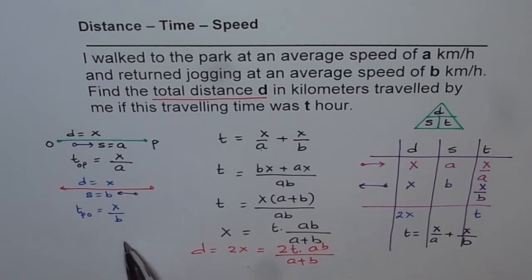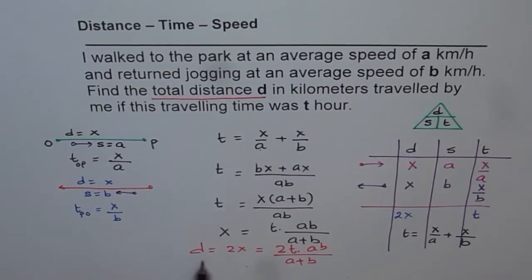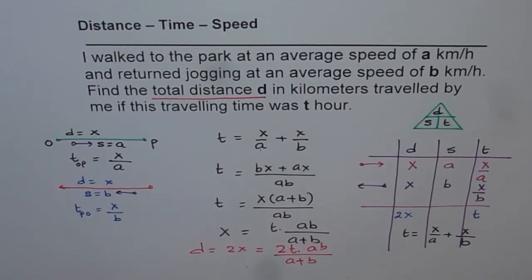You can follow either of these methods — the table approach or the direct method. Either way, the total distance, which is 2X, equals 2T times AB divided by A plus B. I hope that is absolutely clear. We will do a few related examples — try to pause the video, do the questions yourself, and see if you have understood the concept. This is an extremely important concept that will help solve many distance-time-speed problems. All the best, thank you.